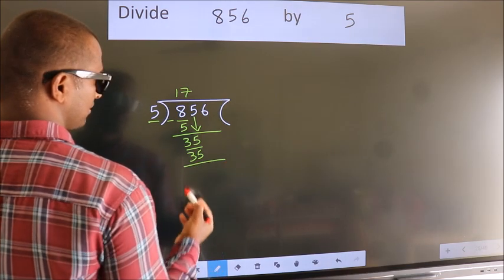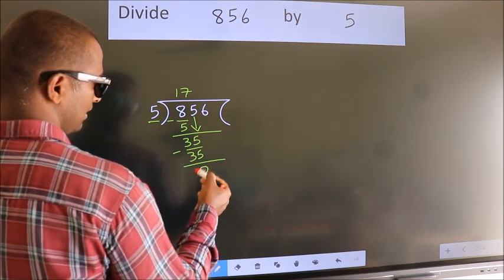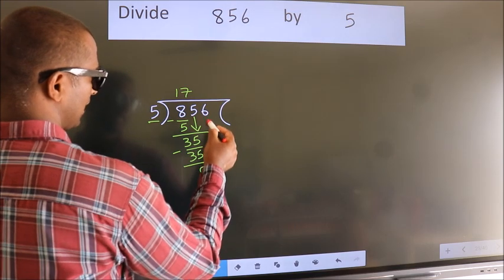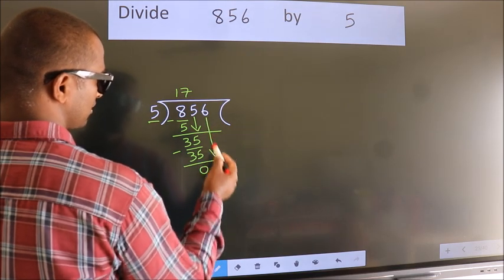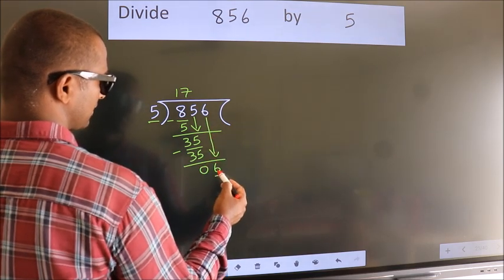Now we subtract. We get 0. After this, bring down the beside number. So 6 down. So 6.